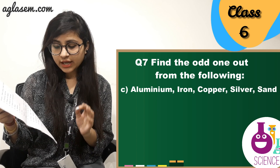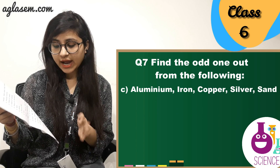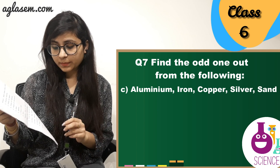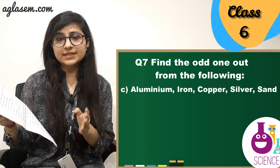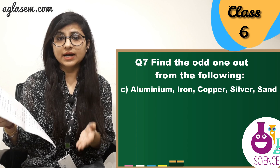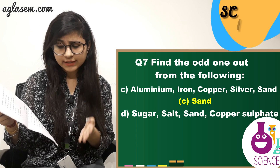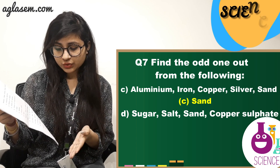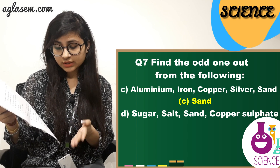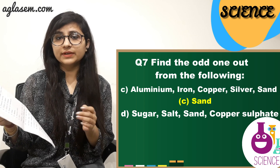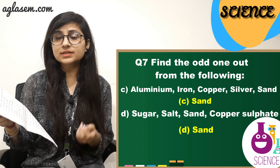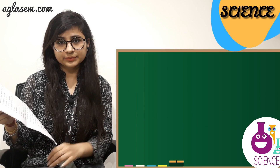C. Aluminium, iron, copper, silver, and sand — the answer is sand. D. Sugar, salt, sand, copper, and sulfate — the answer is sand.